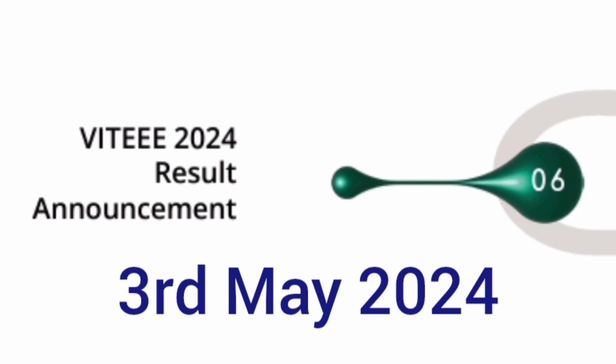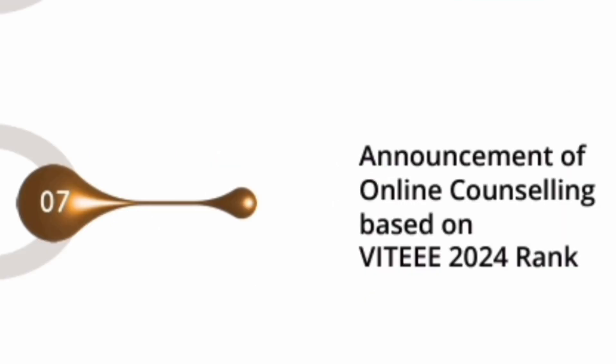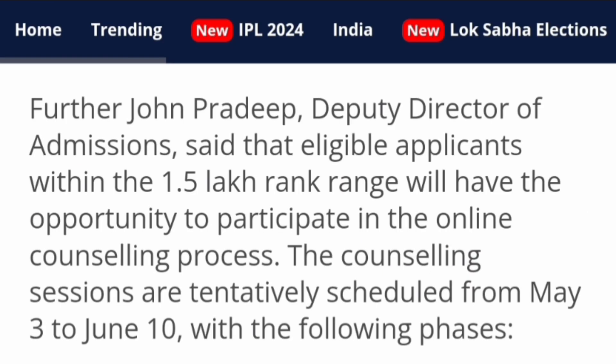The next step is the declaration of VIT 2024 results. The result will be declared on 3rd May 2024. After that, the announcement of online counseling based on VIT 2024 ranks will follow. Students up to 1.5 lakh rank range will be given the opportunity to participate in the online counseling, which will happen between May 3rd and June 10th in four phases.